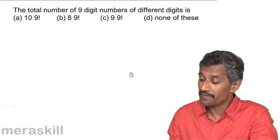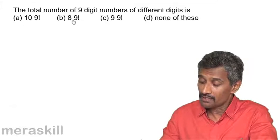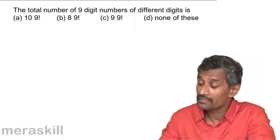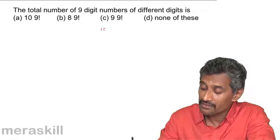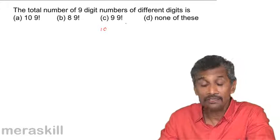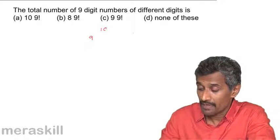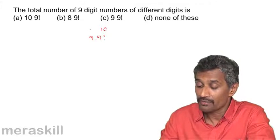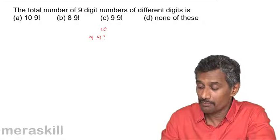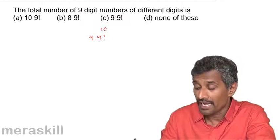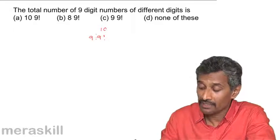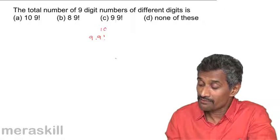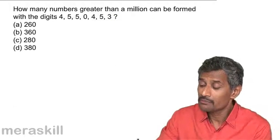What is the total number of 9-digit numbers with all different digits? There are 10 digits (0–9). The first digit can be any of 1–9: 9 choices. The remaining 8 positions can be filled with the remaining 9 digits (including 0) in 9! ways. Total = 9 × 9! such 9-digit numbers.